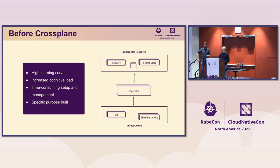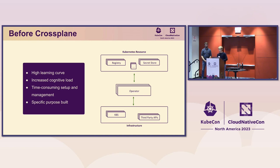Before Crossplane, at a previous company, we had built a whole platform on top of Kubernetes and automated the lifecycle for developers — operators managing registries on Artifactory and Secret Store on Vault. This was quite a high learning curve, requiring Go knowledge and Kubernetes internals, and it was challenging to manage. Those components were purpose-built, and while we open-sourced some operators, they had specificities to our environment and weren't really portable.